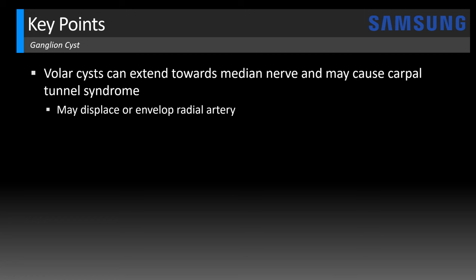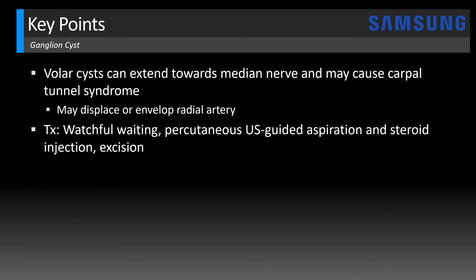Also, these cysts can sometimes displace or envelop the radial artery, which is an important feature for the surgeon to know. Treatment is watchful waiting — these may just resolve on their own. If they do not, percutaneous ultrasound-guided aspiration and steroid injection may help with ganglion cysts, and ultimately they may need to go on to excision for definitive treatment.